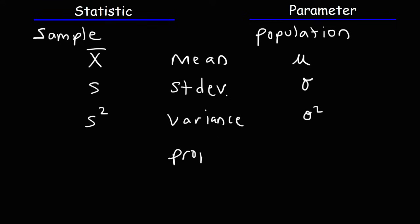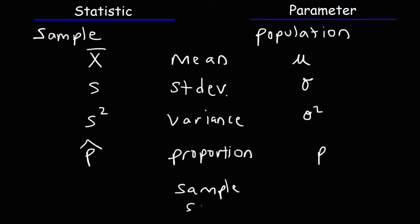Next, we have proportions. The sample proportion is simply p-hat. The population proportion is simply p. Finally, we have size. The size of the sample is represented by the symbol lowercase n — so that would be a statistic. The size of the population is represented by the symbol capital N — so that is a parameter.